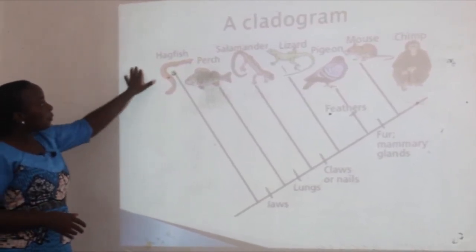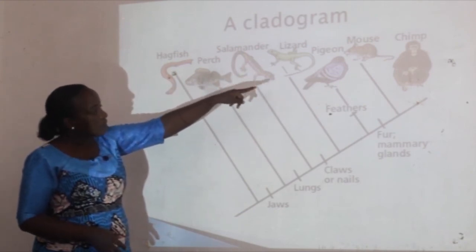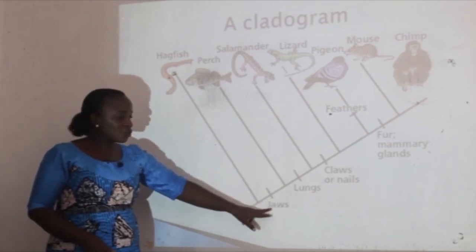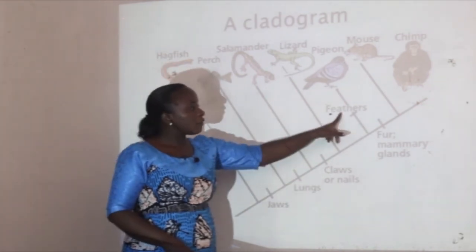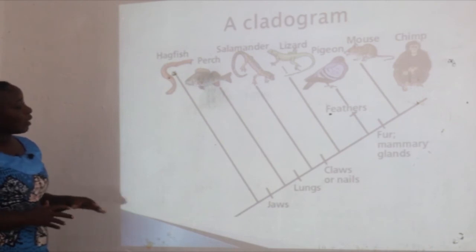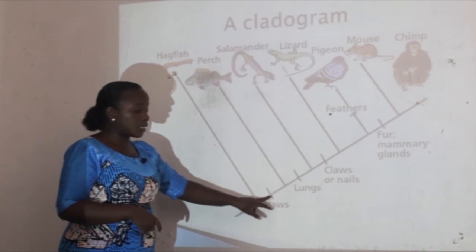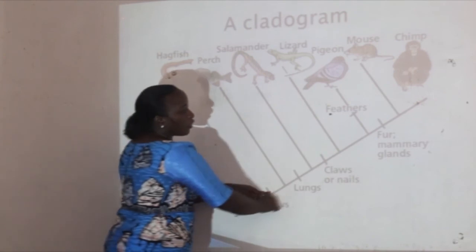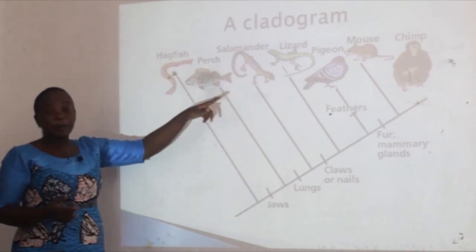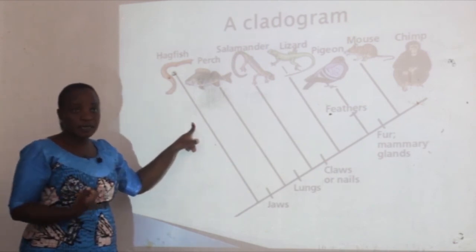In this cladogram, at the top we have organisms — for example, fish, perch, salamander, lizard, pigeon, mouse, and a chick. Alongside, we have characteristics that separate these organisms: jaws, lungs, claws or nails, feathers, fur, and mammary glands. When we move to the first characteristic — jaws — all organisms from that point moving forward possess jaws. Therefore, the perch, salamander, lizard, pigeon, mouse, and chick all have jaws. But moving backward from that point, the half fish does not possess jaws.